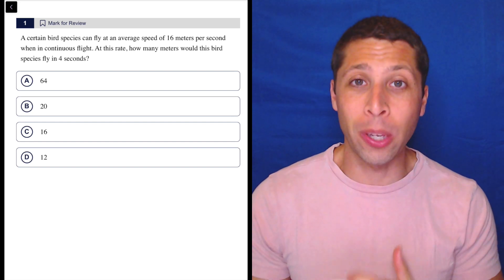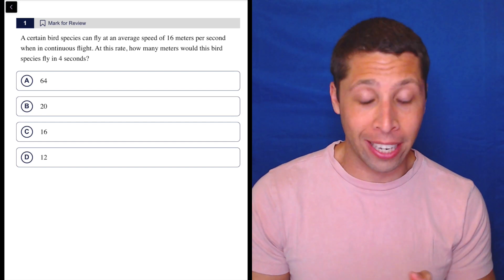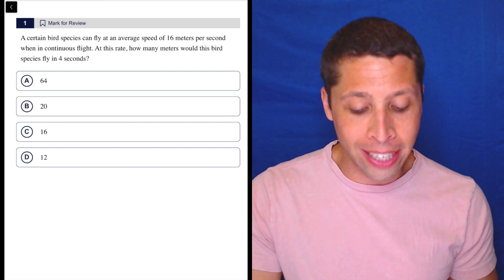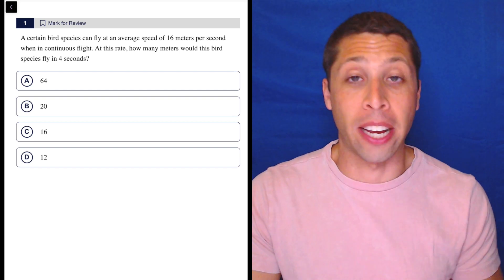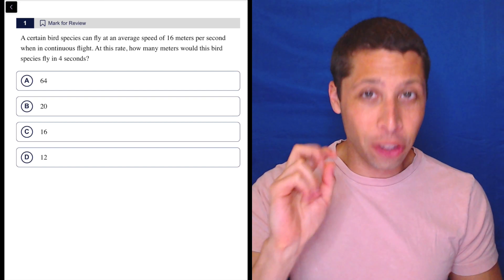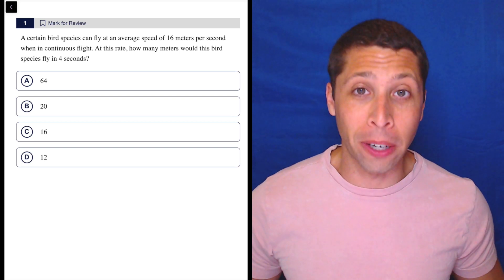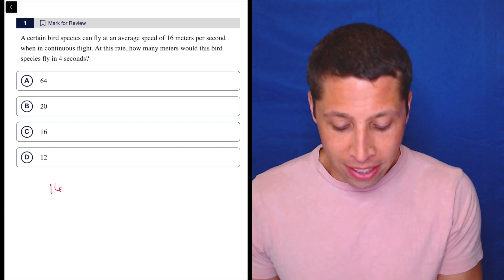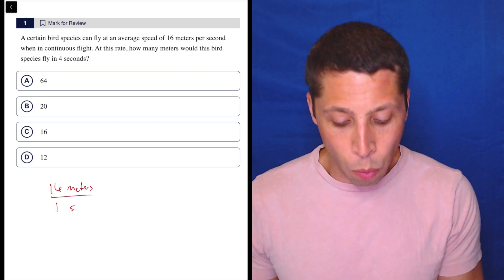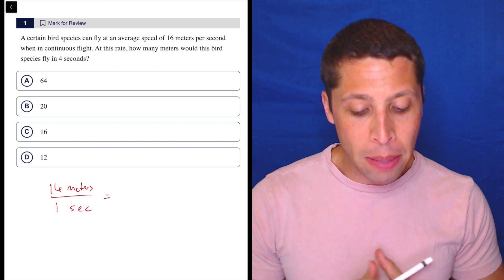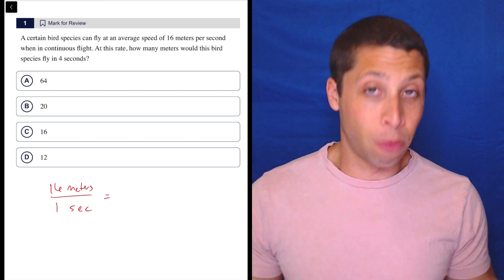We want to make sure that we set up our proportion correctly. We should have units on two sets of fractions. A certain bird species can fly at an average speed of 16 meters per second. That's actually two things - two numbers in one if we're doing it the more formal way. So 16 meters per one second when in continuous flight. At this rate, how many meters would this bird fly in four seconds?